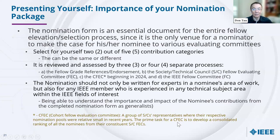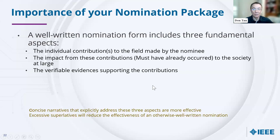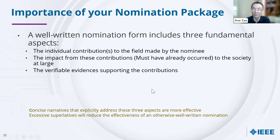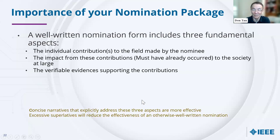The nomination package must address three fundamental aspects: individual contributions to the field made by the nominee, the impact from these contributions, and verifiable evidence. Using concise narratives that explicitly address these three aspects is more effective. Excessive superlatives — adjectives on top of adjectives — do not help. The package needs to be concise and to the point.